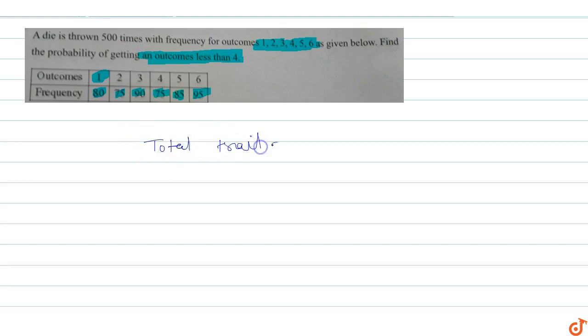The total outcomes or total trials is 500 times. Now, to find the probability where outcome is less than 4, that means outcomes 1, 2, or 3. We need to calculate the favorable outcomes.